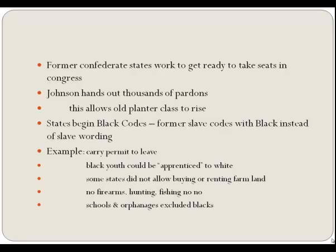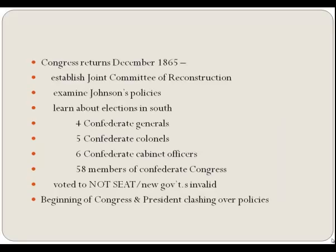All Southern states began to impose severe black codes that restricted the freedom of former slaves. These codes included: no carrying a gun; mandatory contracts of employment; curfews or arrest; youth apprenticed to white employers without parental consent—courts even bound young people in their 20s as apprentices. In some states, former slaves were disallowed from owning or renting farms, from hunting, fishing, or grazing livestock freely. Most state-supported institutions such as schools and orphanages excluded Blacks totally.